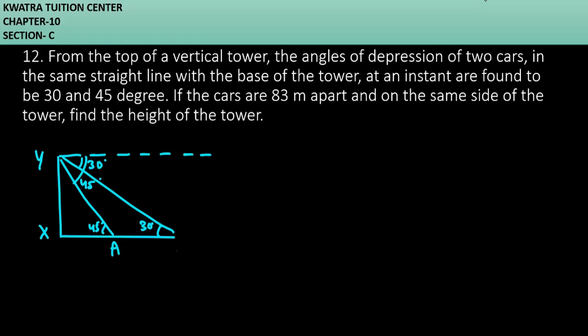Let's say this is point A and this is point B. The cars are 83 meters apart and on the same side of the tower. Find the height of the tower. We need to find h. We have two triangles involved. We have the base and perpendicular involved. No one has to find the hypotenuse, so I will use tan. Tan 45 equals perpendicular over base, h over xa.